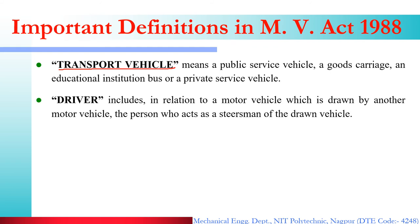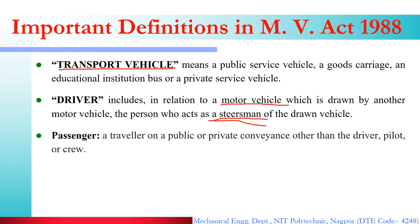This is the classification of vehicles. Next, Driver: in relation to a motor vehicle, the person whose job is to control the vehicle — which is drawn by another motor vehicle — the person who acts as a steersman, who controls the steering, that person is known as the driver of that vehicle. Then Passenger: a traveler on a public or private conveyance other than the driver, pilot or crew. So a passenger is someone traveling in the vehicle other than the driver — excluding conductor or those providing service — anyone else traveling in the vehicle is a passenger.